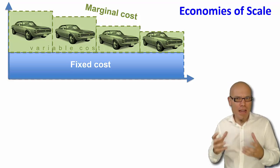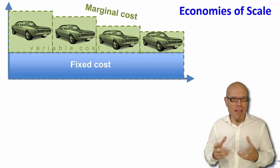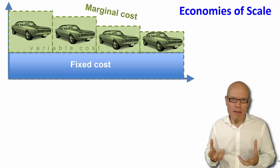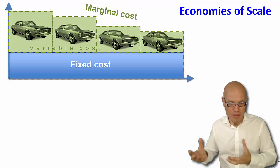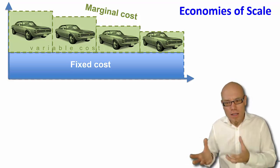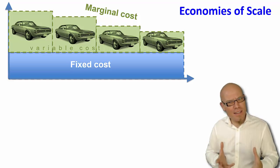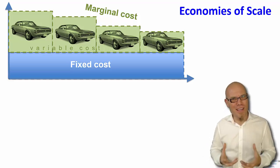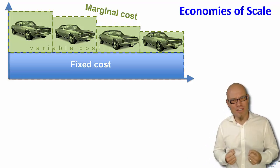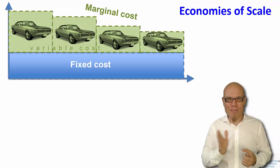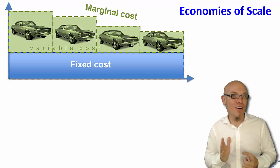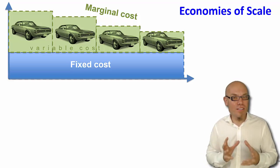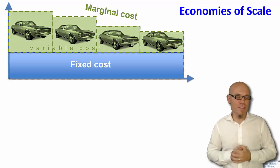If I buy a territory and build a factory only to create one car, it's kind of a waste. But if I produce thousands of cars, it makes sense to spend the money on territory and so forth. So on average, my fixed cost pays off because of these economies of scale.